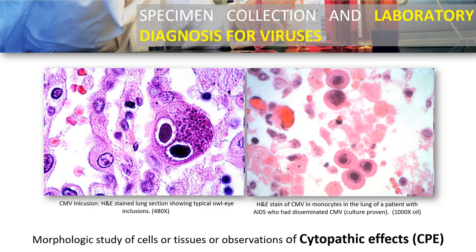Cytopathic effect, or CPE, refers to changes in host cell morphology caused by the infecting virus. Common visual observations include swelling, rounding, lysis, clamping, sinking, deformation, and inclusions. In this picture, this is a typical CMV inclusion using H&E stain. The characteristic is described as an owl eye inclusion, which is a syncytial formation where two cells are combined. The other picture shows a characteristic monocyte infected with CMV.